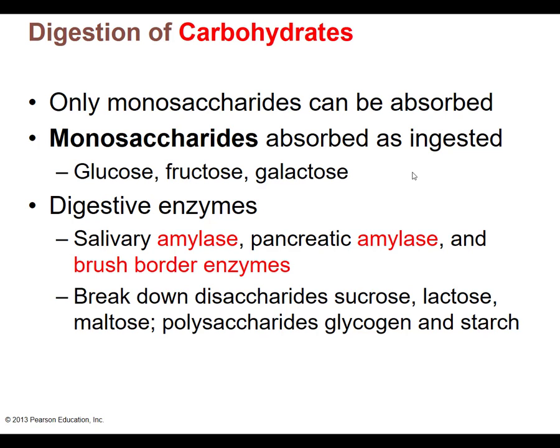The monosaccharides we can absorb are glucose, fructose, and galactose. We have to break all our big complex sugars down into these basic sugars. The enzymes that help break down carbohydrates are: salivary amylase found in our saliva, pancreatic amylase coming from our pancreas, and brush border enzymes found in the microvilli of our small intestine. These will break down disaccharides — double sugars like sucrose, lactose, and maltose — as well as large sugar molecules like glycogen and starch, which are more complicated.